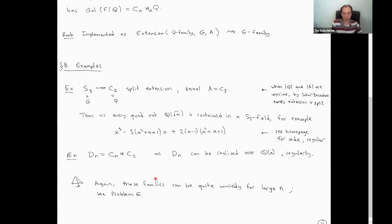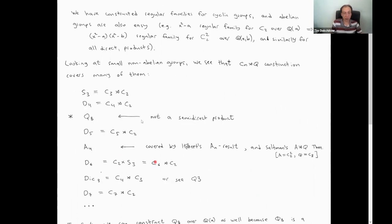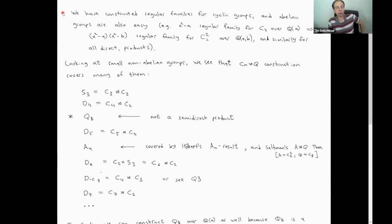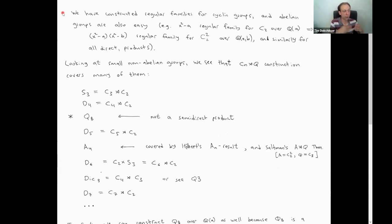So that's two examples. Now let's take a little bit of a deep breath and see what it is that we've done. So the last two lectures we constructed regular families for cyclic groups. And now from there it's quite easy to get abelian groups as well, because generally it's easy to construct direct products of two groups if you can construct regular families for both of them.